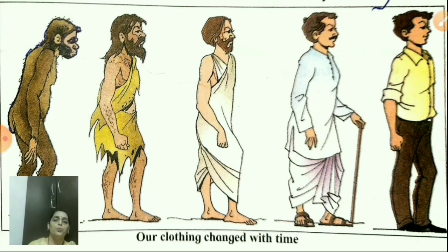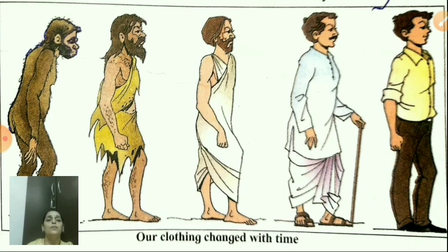Our clothing changed with time. In ancient times, man had plenty of body hair, so he did not wear clothes. After that, he started using animal skin, then bark of the tree, then leaves of the tree. After that, he started preparing yarn from cotton thread. Then man started stitching clothes by hand — like kurta and dhoti. And today, modern man wears shirts and pants. This is the progress of man in clothing.